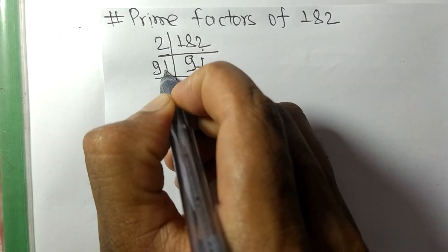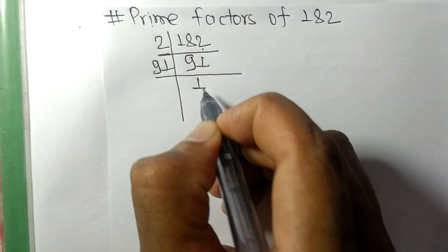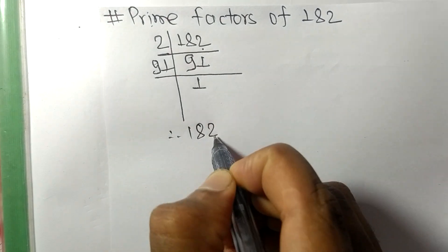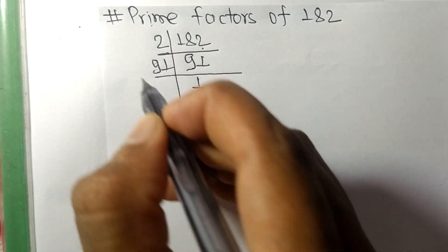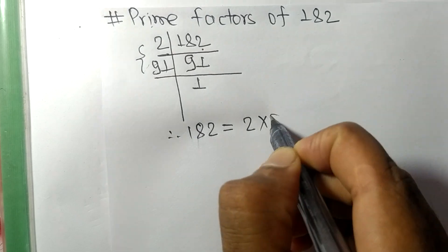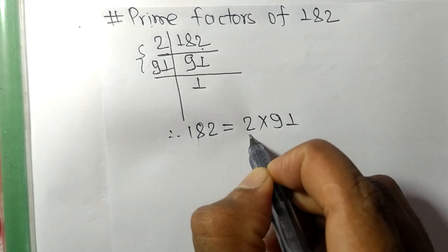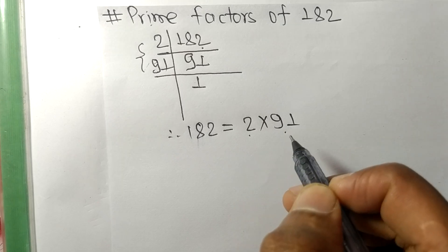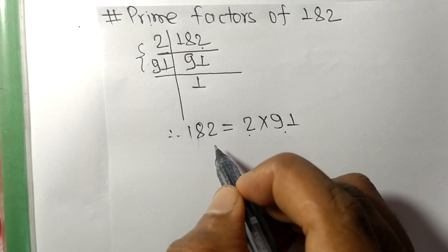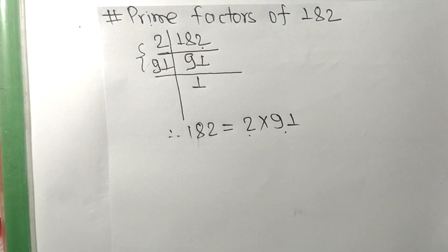So 182 is equal to 2 times 91. Therefore, 2 and 91 are the prime factors of 182. That's all for today — thanks for watching.